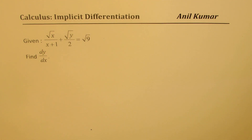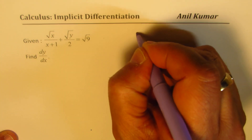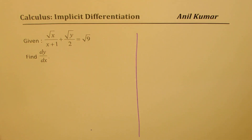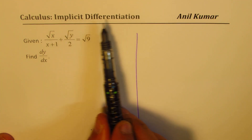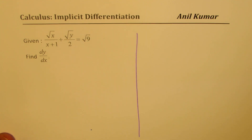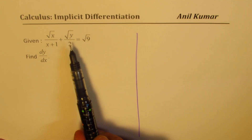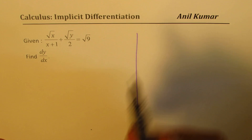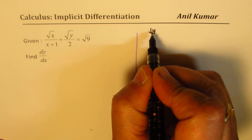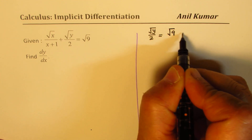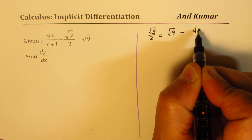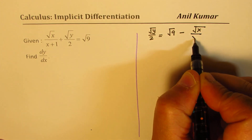In this question, however, we could easily isolate y. So what I will do here is provide two different solutions — we'll do implicit differentiation and also a general differentiation. I could actually rewrite this as square root of y over 2 equals square root of 9 minus square root of x over (x plus 1).